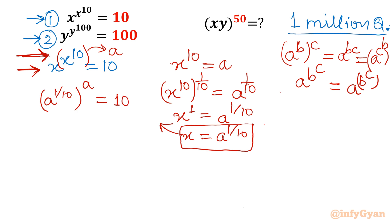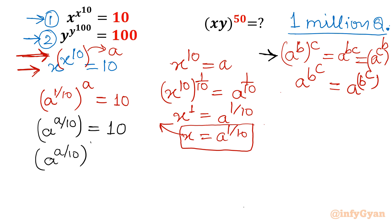Now, using the same property, I take the product of exponents: it becomes A^(A/10) = 10. I can also swap the exponent — write it as A^(1/10) raised to the 10th power. Raising both sides to the 10th power: A^(A/10) whole power 10 = 10^10. Applying the same exponent rule again, this simplifies to A^A = 10^10.